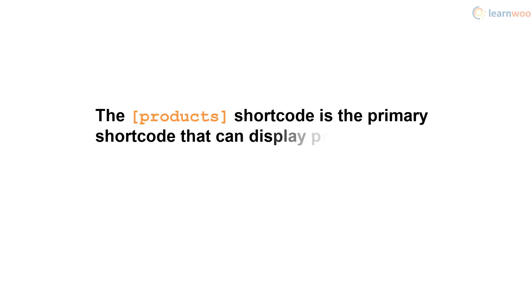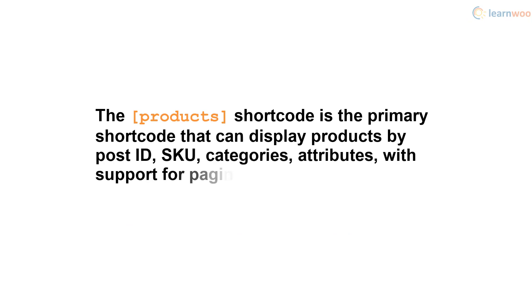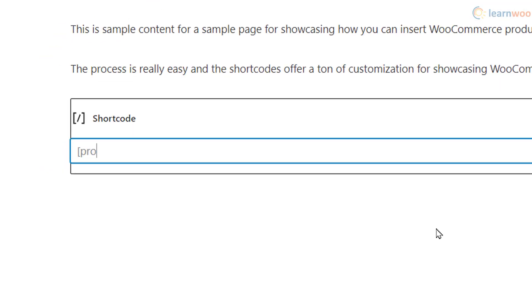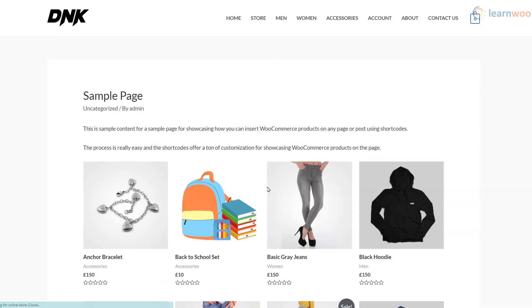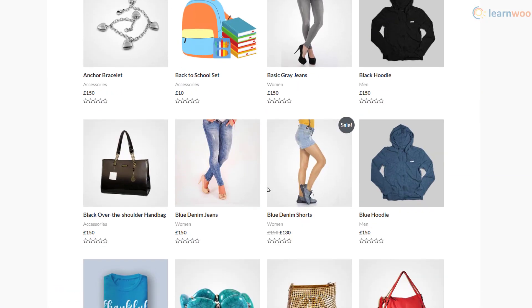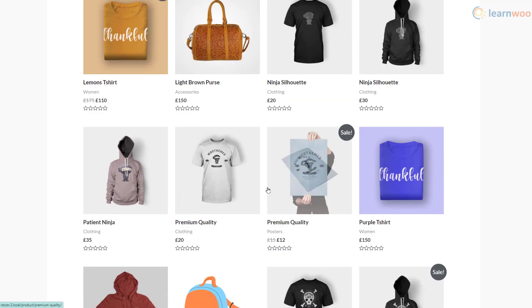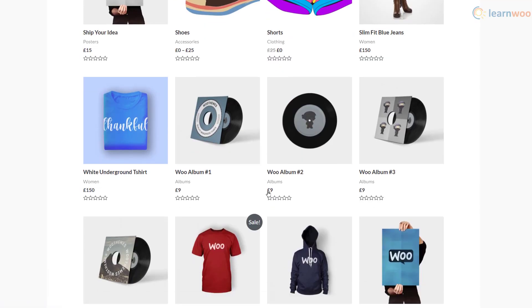The products shortcode is the primary shortcode that can display products by post ID, SKU, categories, and attributes, with support for pagination, random sorting, and product tags. Simply adding it to any page will display all the products on your shop page. However, you can control how it looks using a long list of attributes.